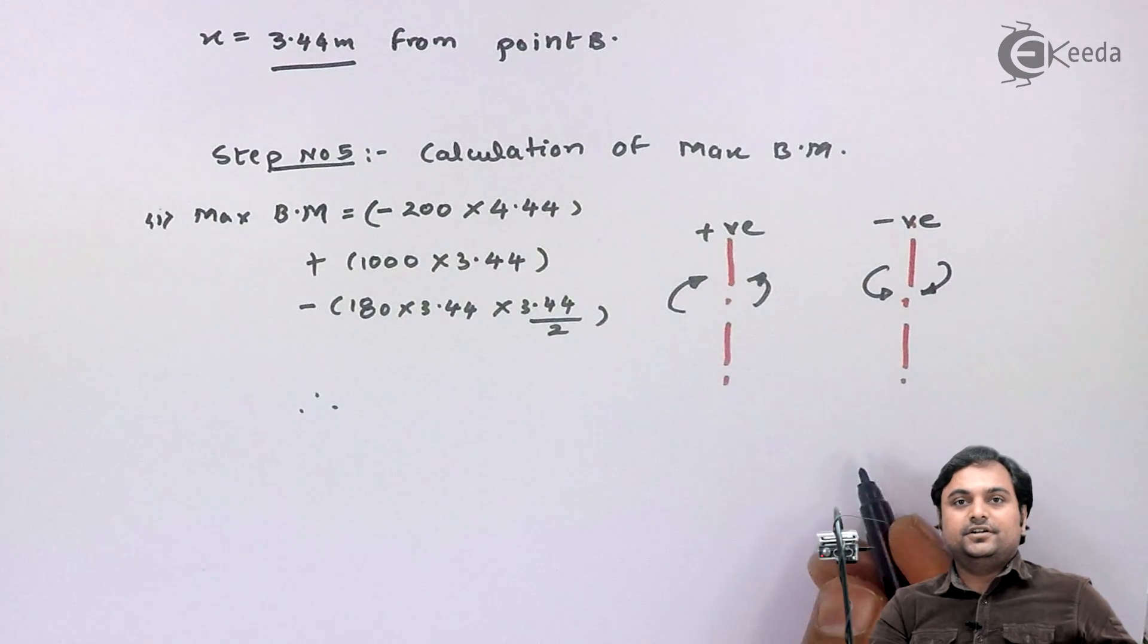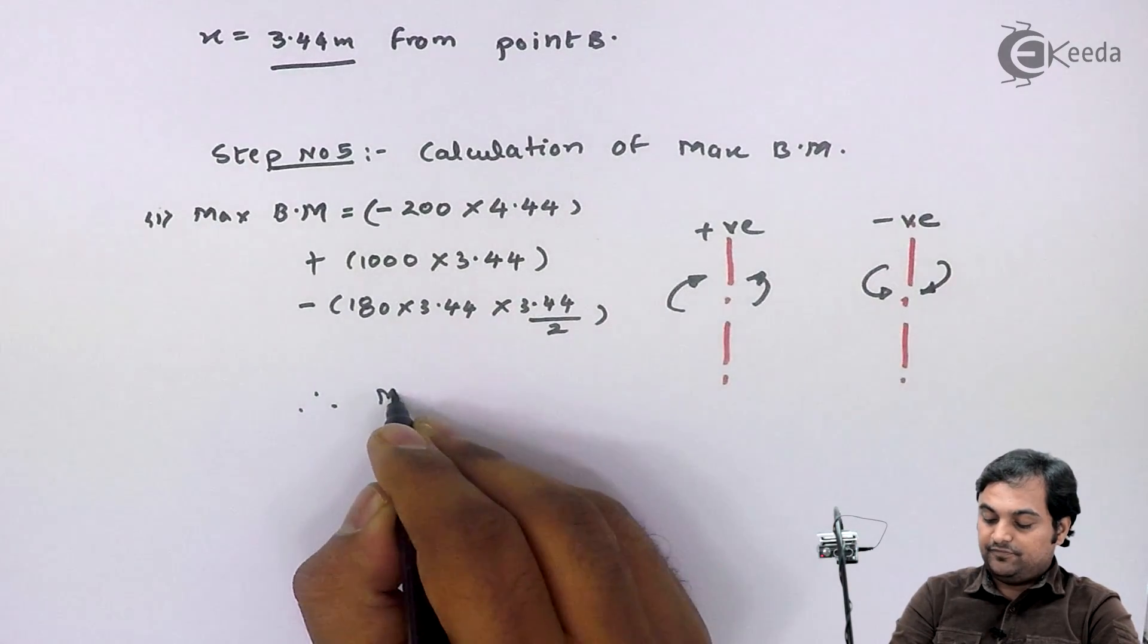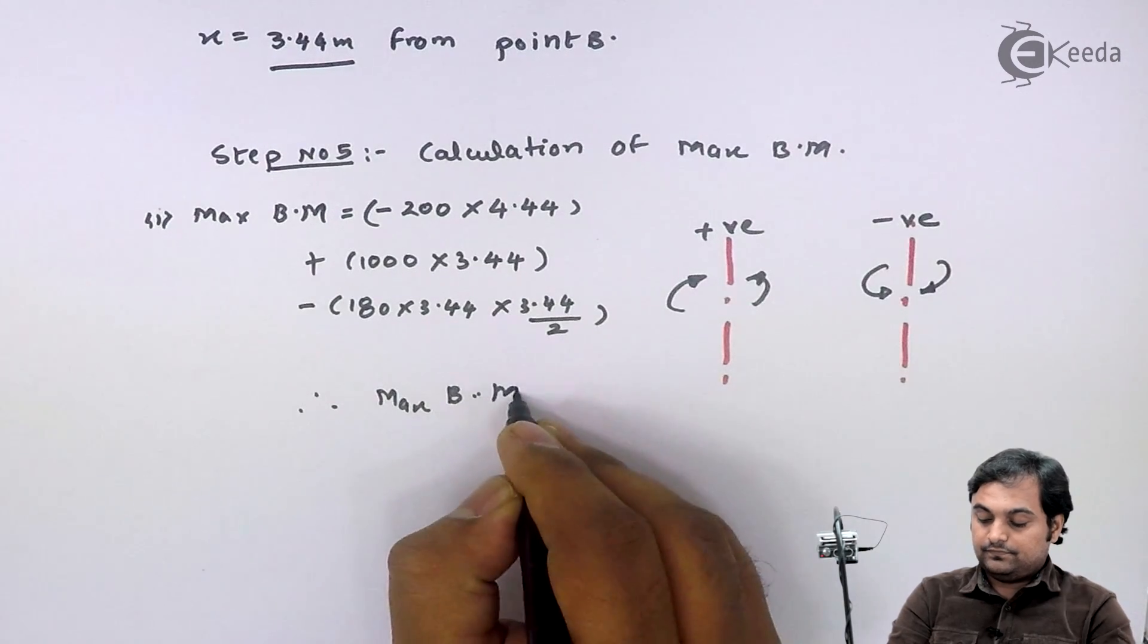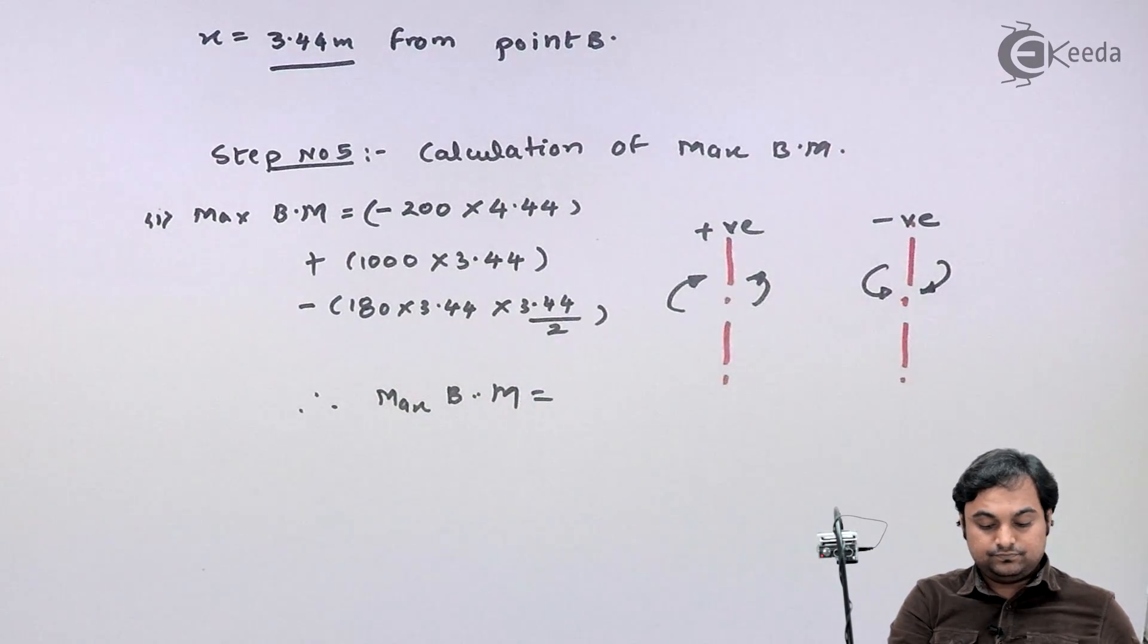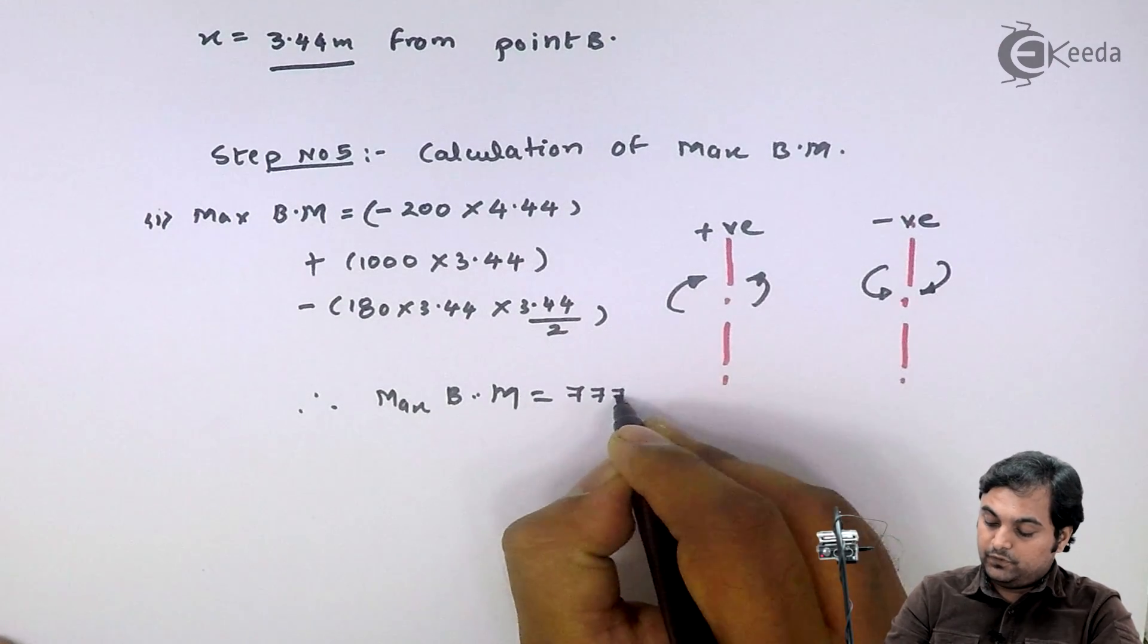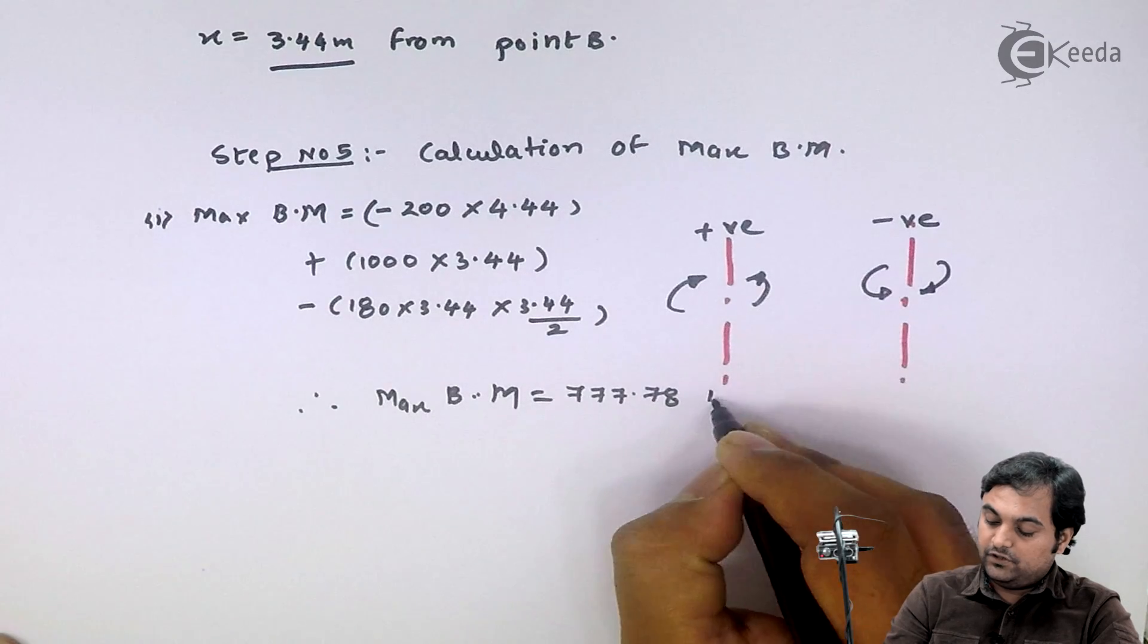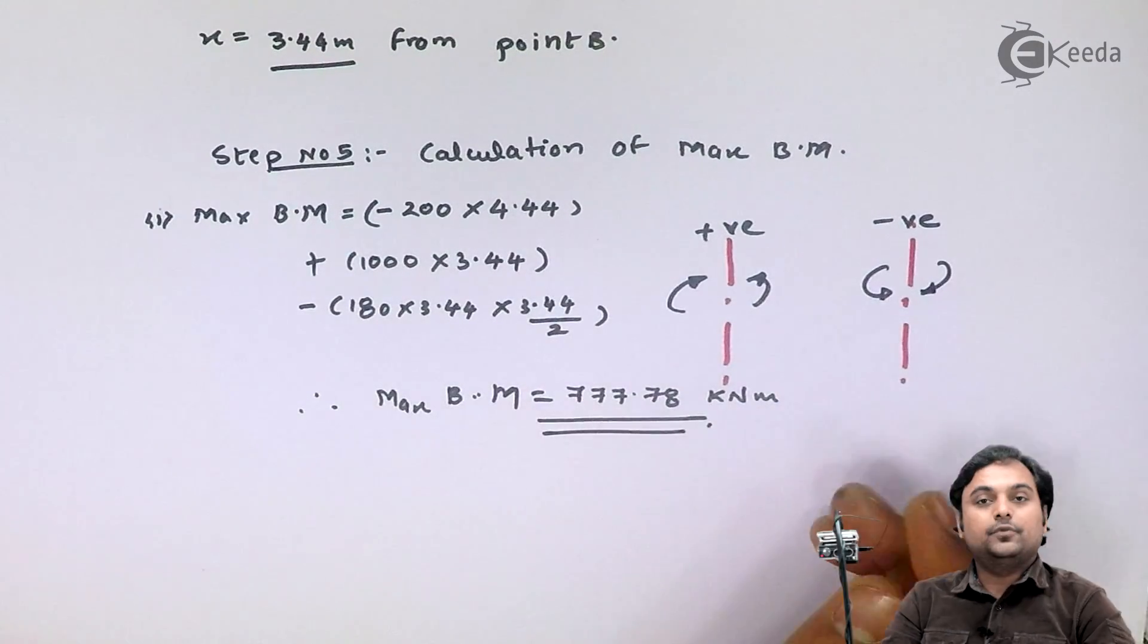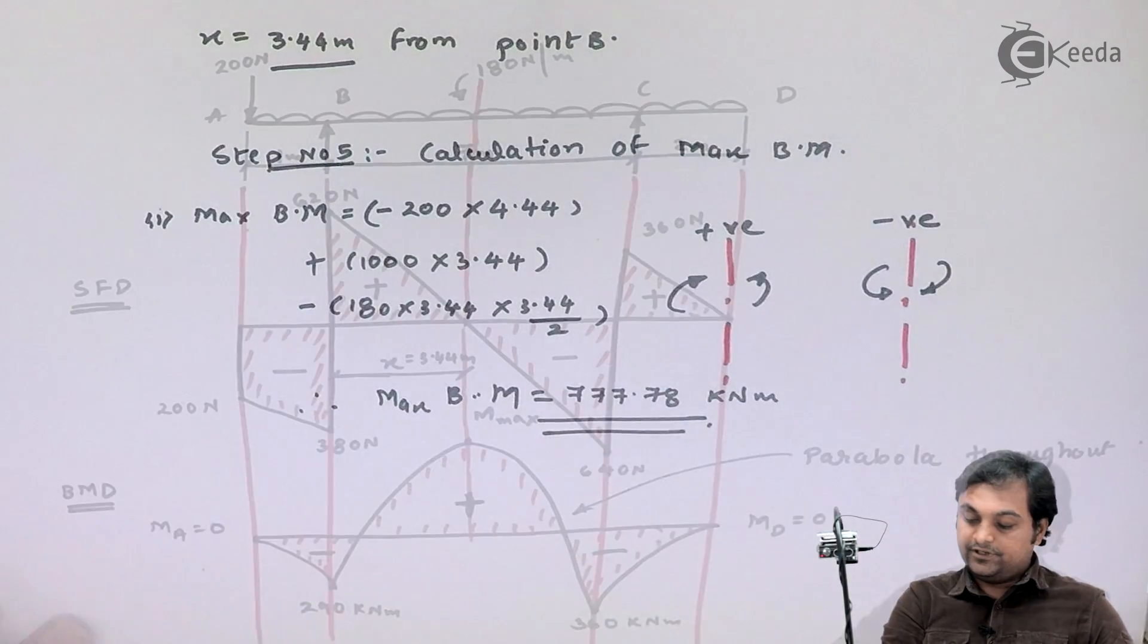From this, if I calculate here, I will be getting my answer of maximum bending moment is equal to 777.78 kilonewton meter.